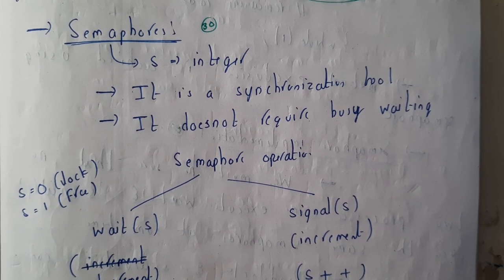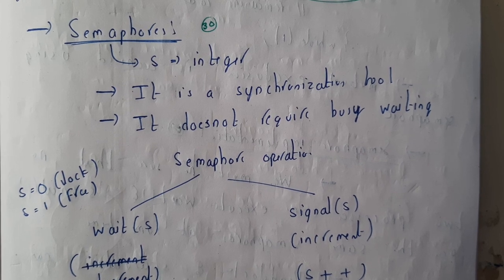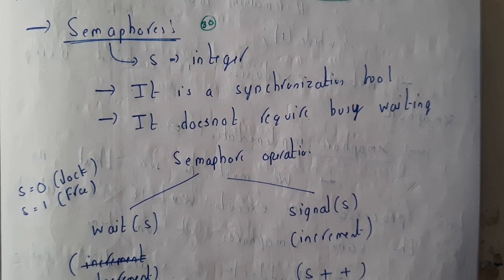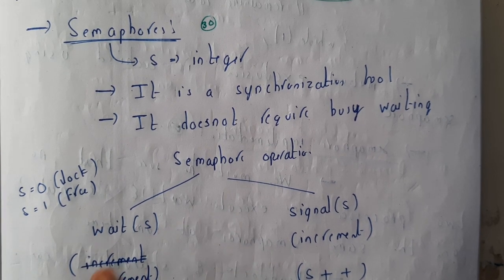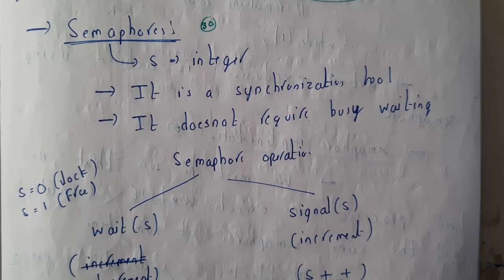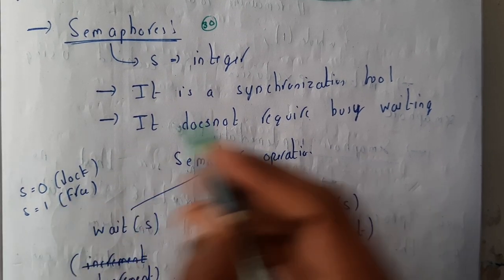Hello guys, we are back with our next tutorial. In this tutorial, let us go through the concept of semaphores. Basically, semaphore is denoted by the letter S. It is an integer value. Semaphores are used for synchronization of processes.